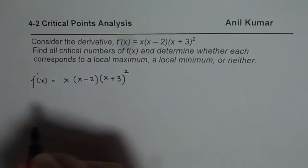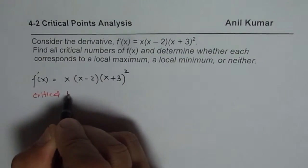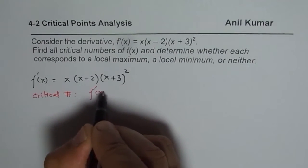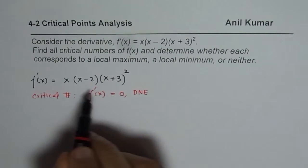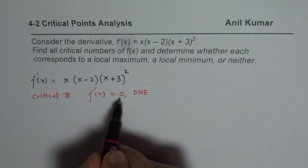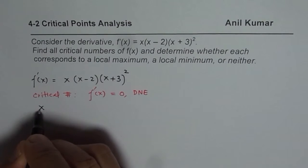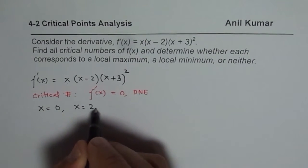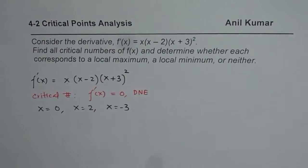From here, we can find the critical numbers at positions where the derivative is 0 or does not exist. In this case, it will exist everywhere, but it could be 0 at some places. So, f'(x) = 0 will give us critical numbers: x = 0, x = 2 from the next factor, and x = -3 from the other factor.